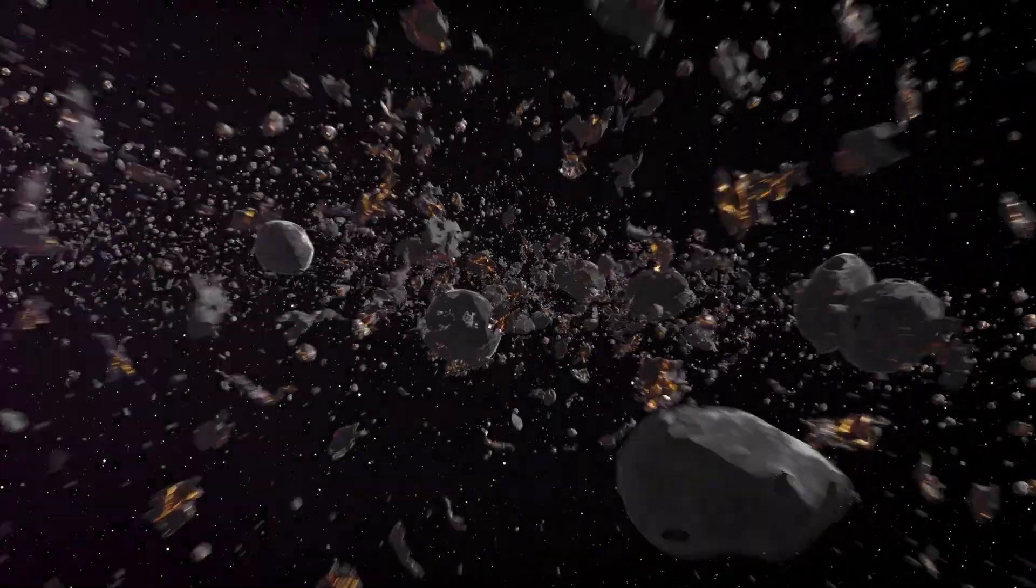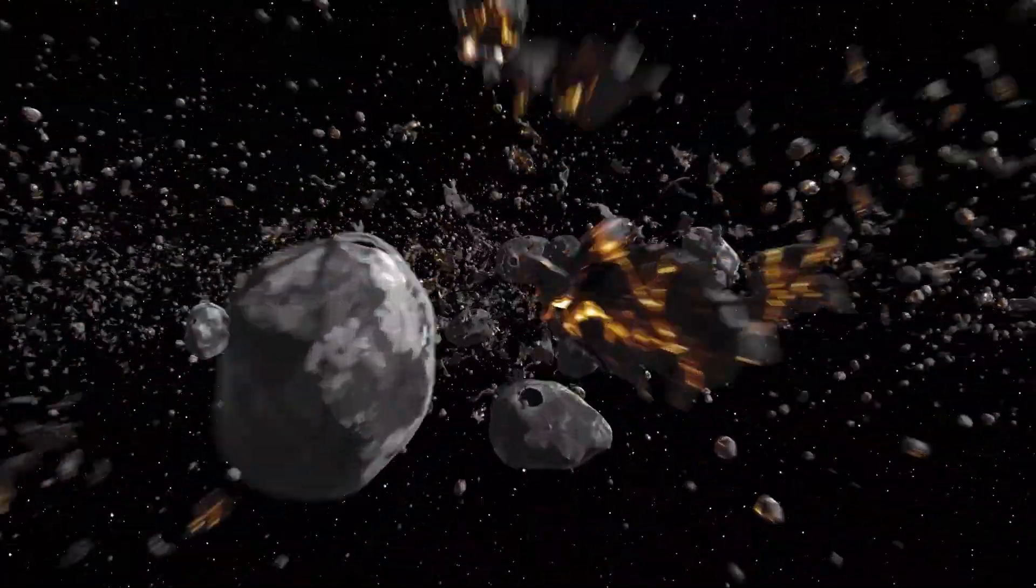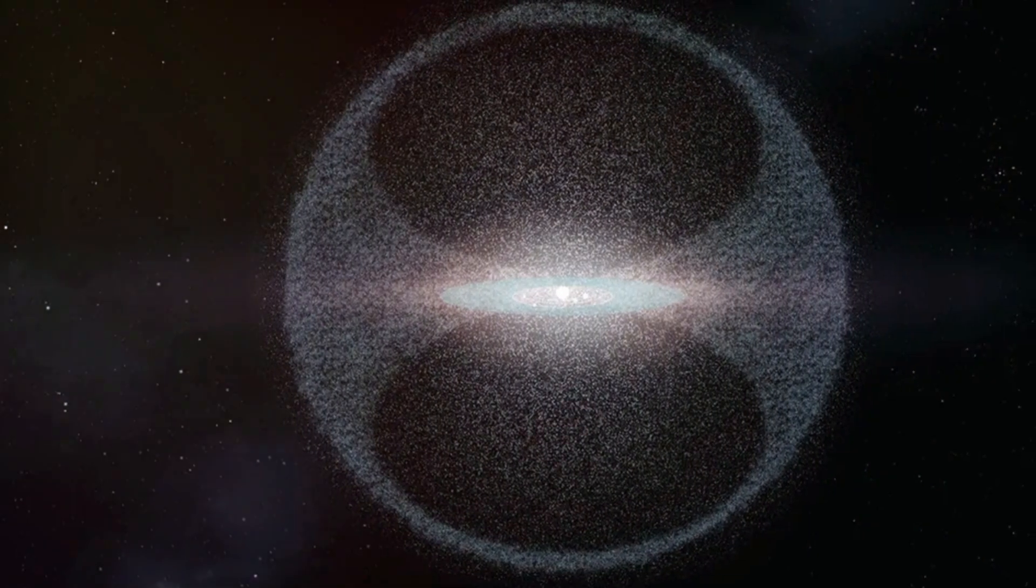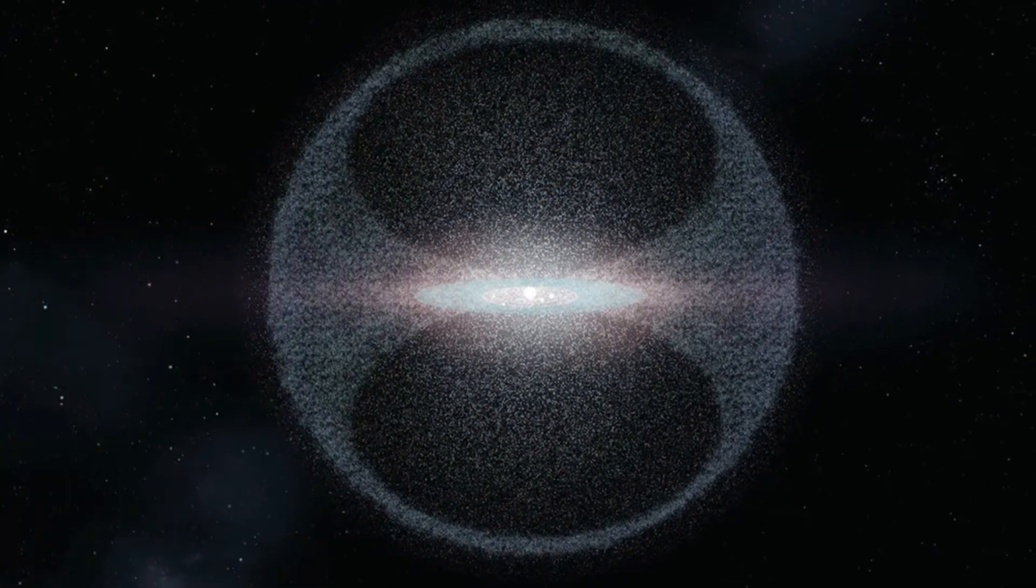Beyond the familiar planets and the asteroid belt lies a realm of profound mystery, the Oort Cloud. This vast spherical shell of icy objects envelops our solar system, marking its outermost frontier.